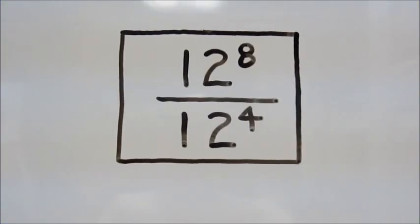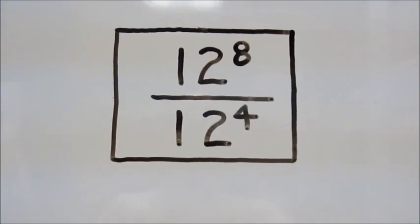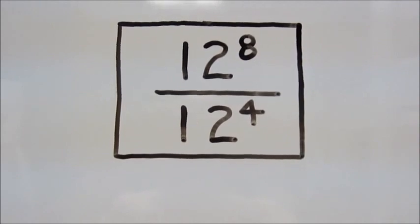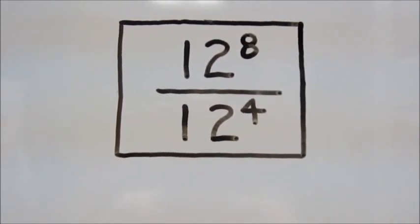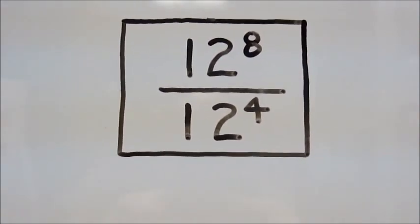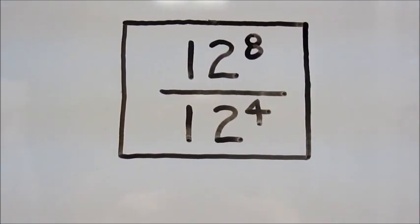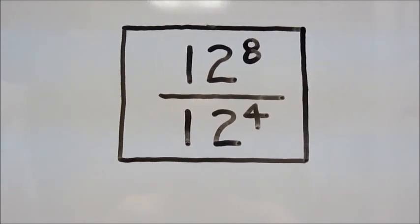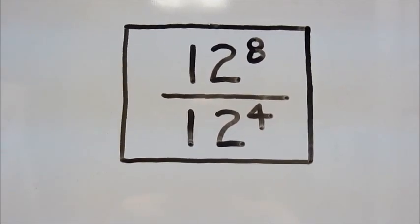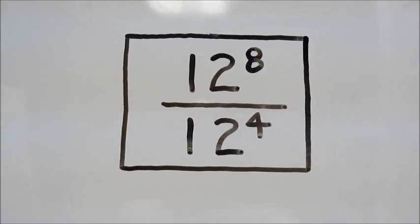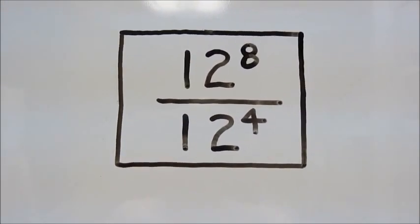When we're dividing whole numbers with exponents, such as the problem on the board — 12 to the 8th power divided by 12 to the 4th power — all we're going to do is keep the base and subtract the exponents.